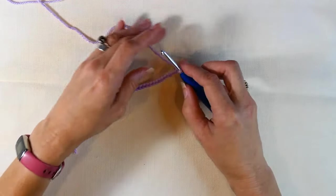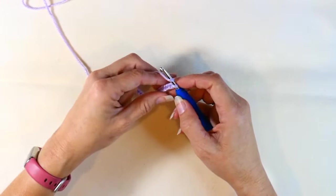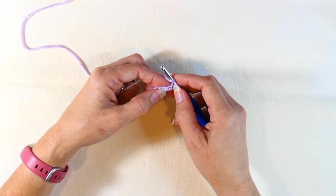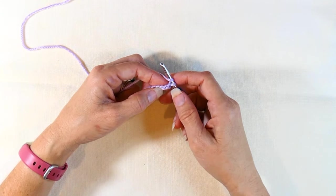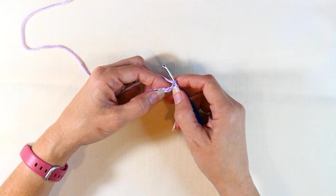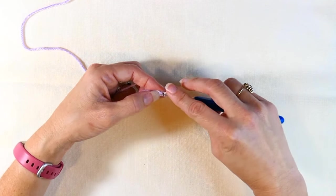So here, all I've done is I've made a chain stitch, and what I'm going to do is work into that third chain from my hook. So there's 1, 2, 3, so there's 1, 2, and that third one.